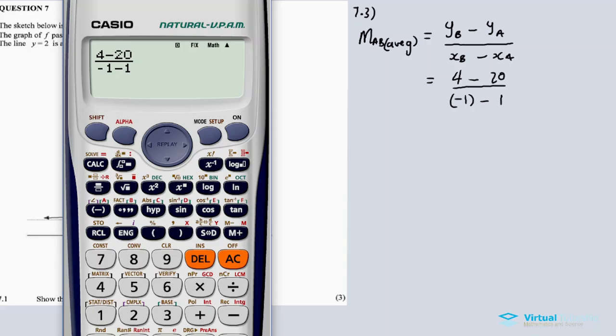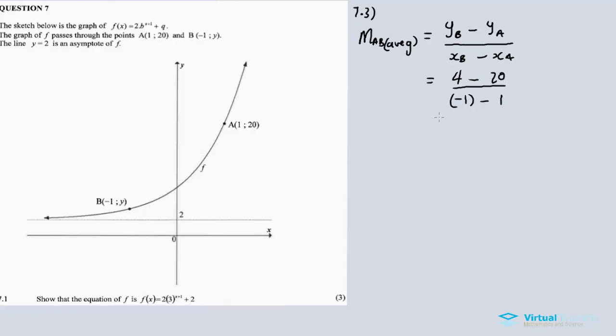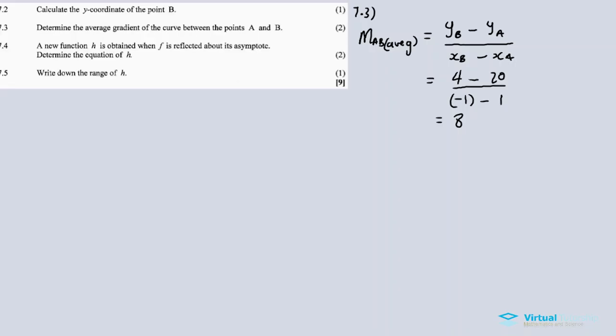Let's calculate. 4 minus 20 is negative 16, divided by negative 2 equals positive 8. So our answer is positive 8. This is the average gradient, calculated like a normal gradient.